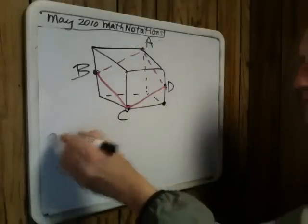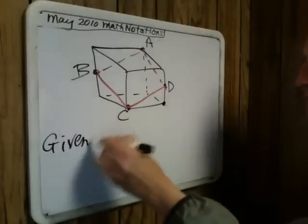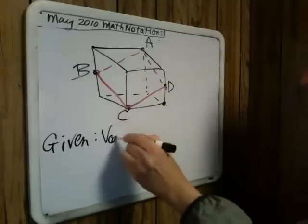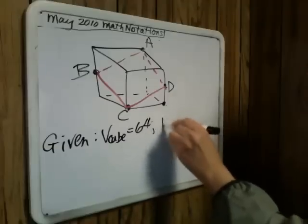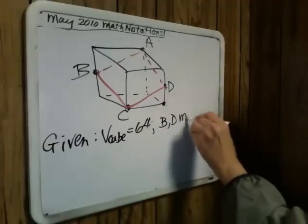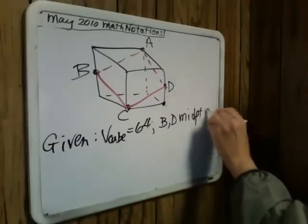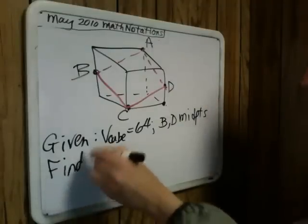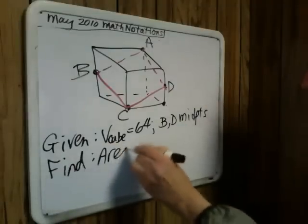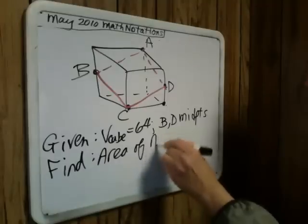So, you're given the volume of the cube is 64, B and D are the midpoints of two edges. Find the area of quadrilateral A, B, C, D.